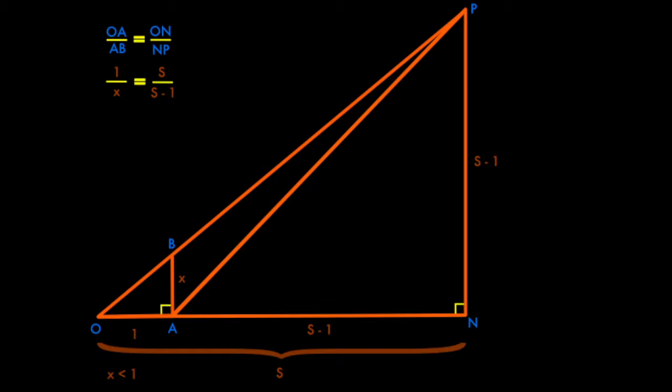Okay, so before we draw the actual cobweb diagram, I want to point out this ratio. And the ratio is from the side OA to AB and the side ON to NP. So 1 is to x as S is to S-1. And I'll show why that is.